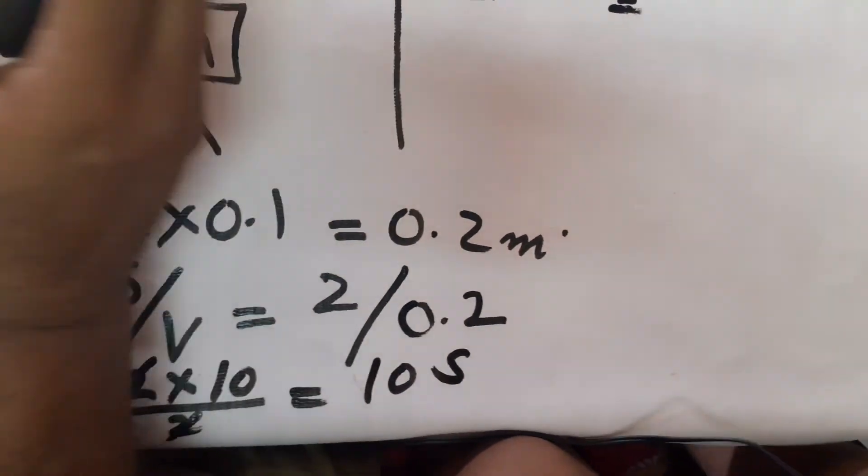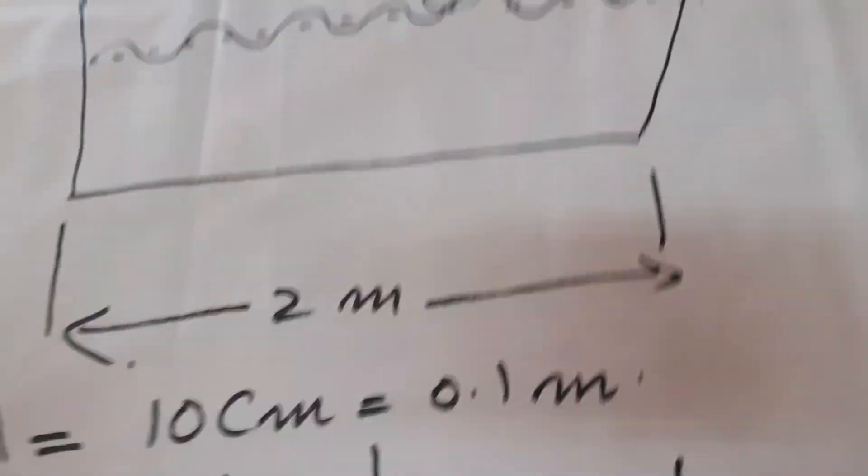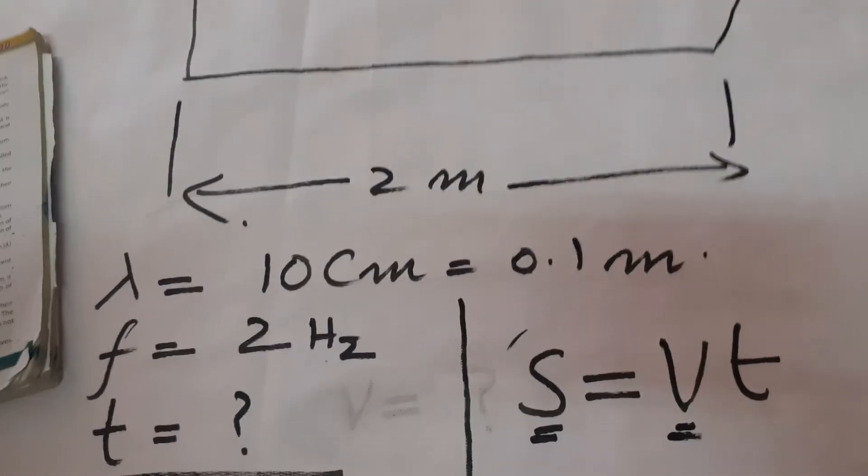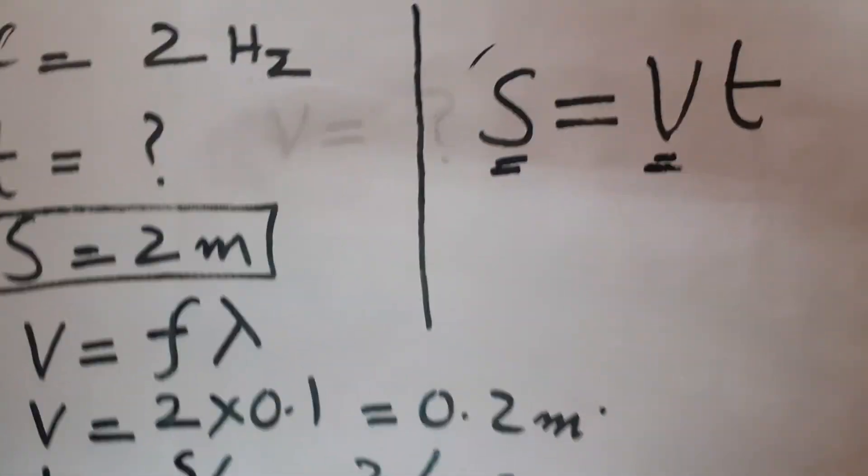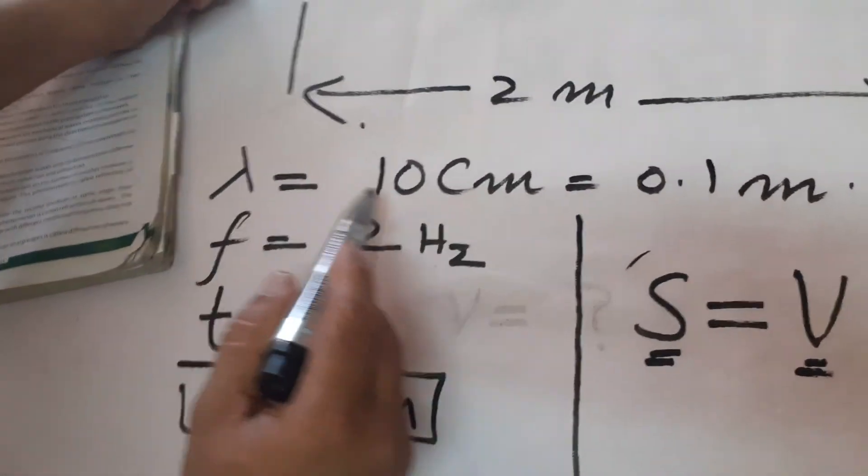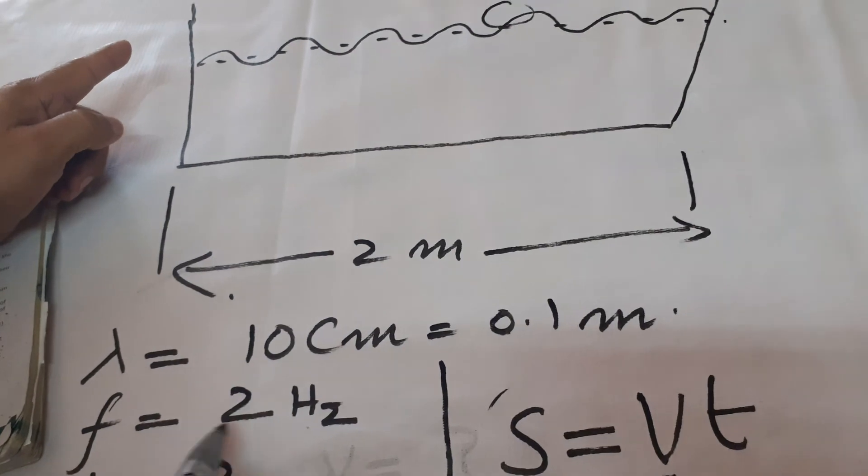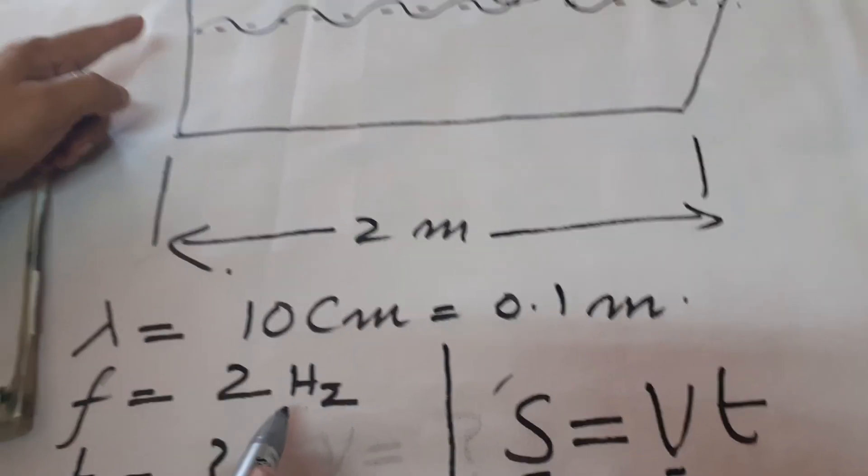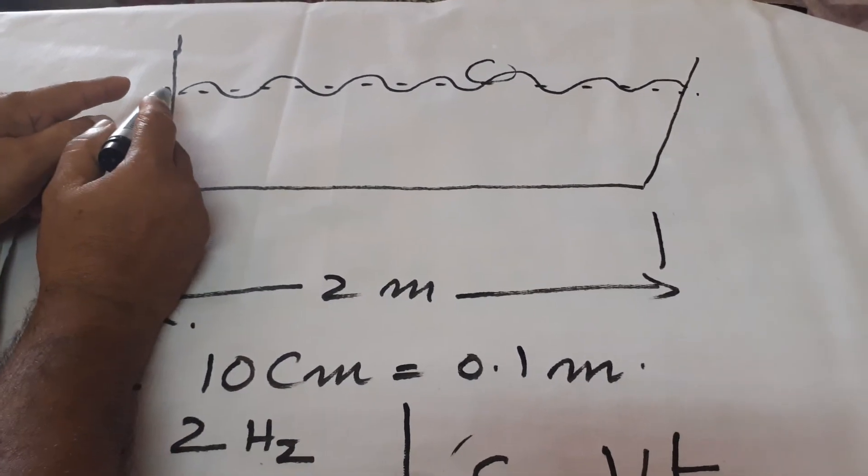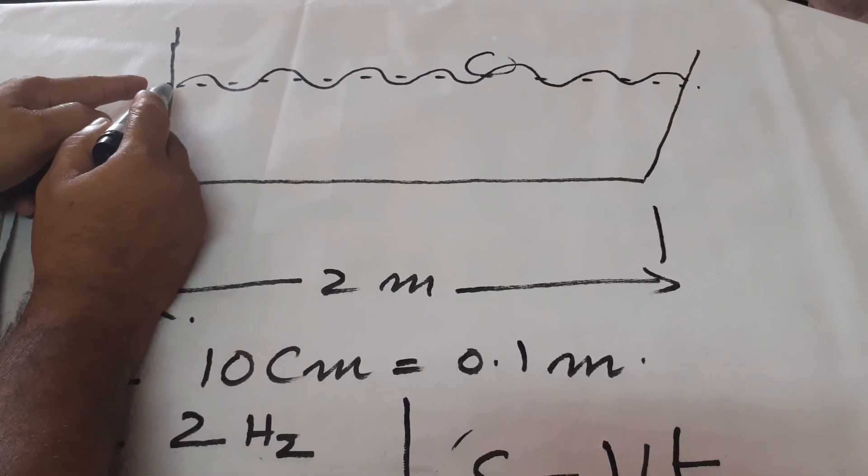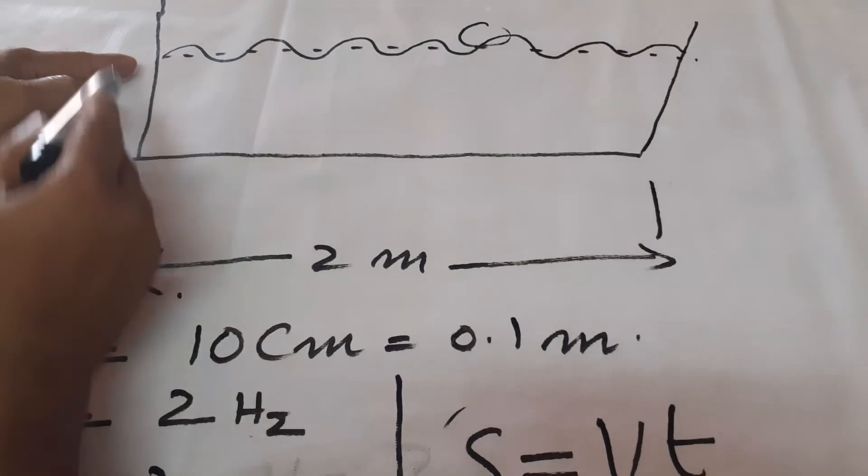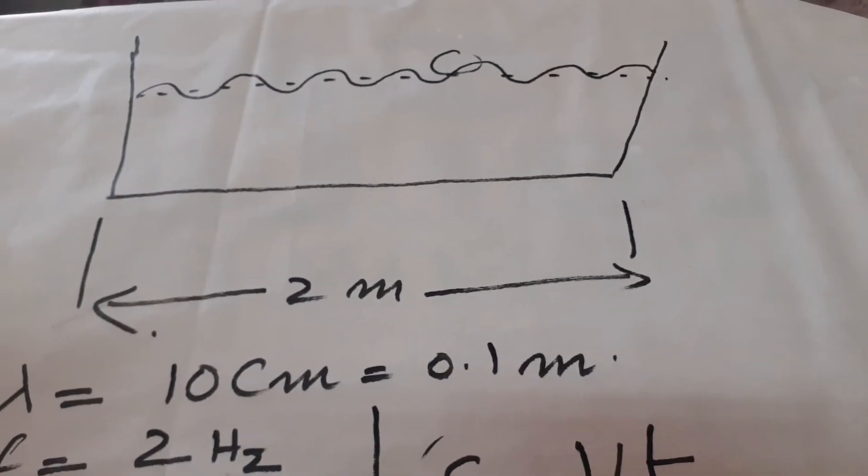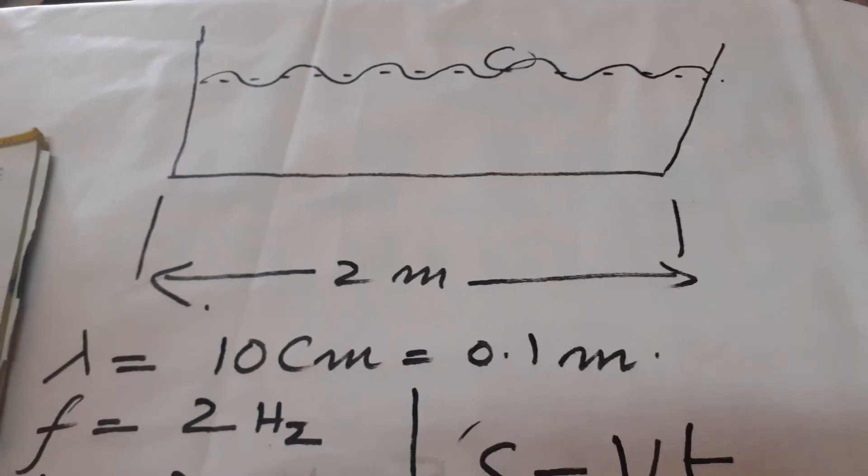In this water tank, when the student produces waves of wavelength 10 centimeters and frequency 2 hertz, the time is 10 seconds to cover the distance of 2 meters. Thank you and God bless you.